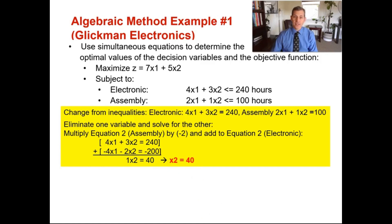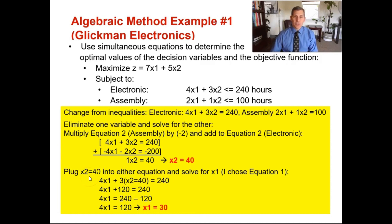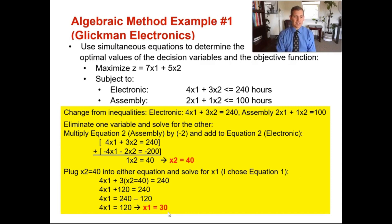Now let's solve for x1. We plug our x2 of 40 into either equation — I'm choosing equation number one. So 4x1 plus 3 times 40 gives us 4x1 plus 120 equals 240. Then 4x1 equals 240 minus 120, so 4x1 equals 120. Dividing 120 by 4 gives x1 equals 30. You've now solved for both decision variables very quickly — without Microsoft Excel Solver or the graphical method steps — arriving at x2 equals 40 and x1 equals 30.